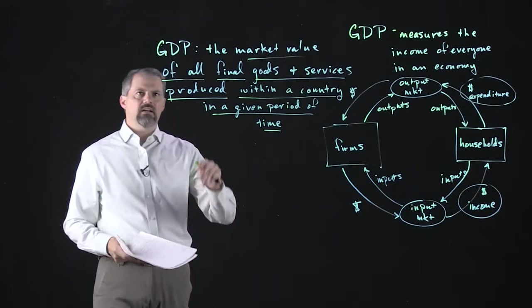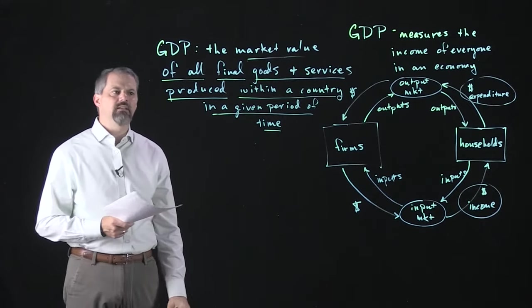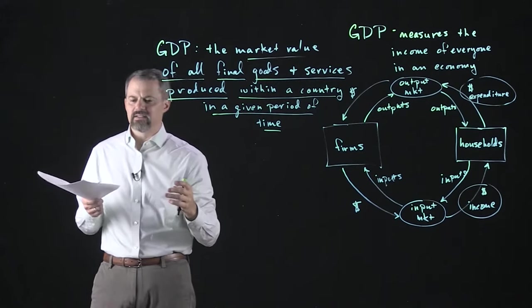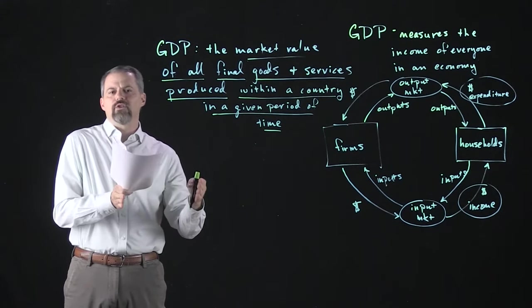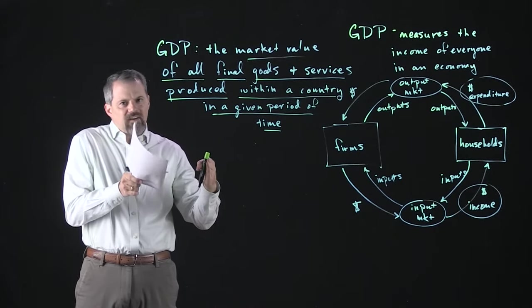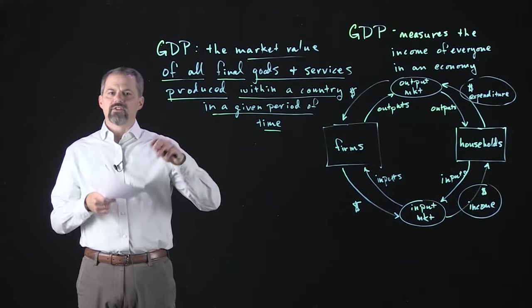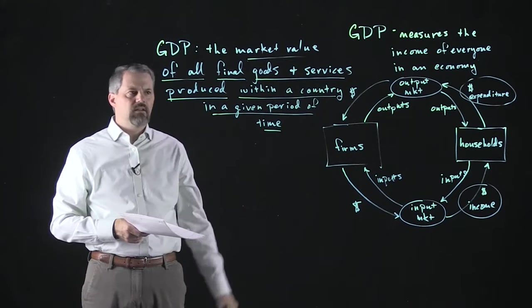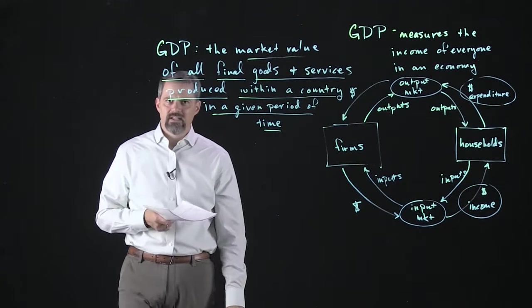There's a lot that goes into this definition — every little phrase has a very particular meaning. When the government reports GDP, it is typically seasonally adjusted. Without seasonal adjustment, you couldn't compare GDP from the final quarter of one year to the first quarter of the next, because the holiday season generates a lot more economic activity than other quarters. Seasonal adjustment corrects for that so you can make valid comparisons. We don't need to go into exactly how that's done — just keep in mind that GDP is typically seasonally adjusted.